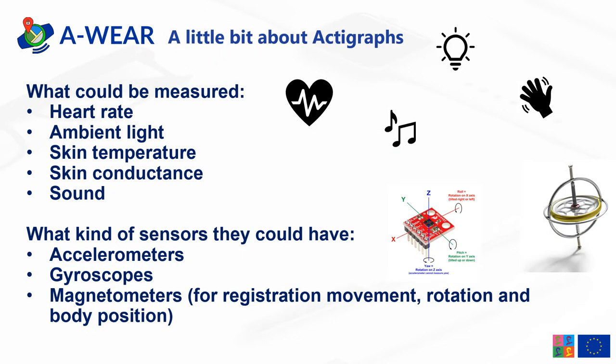Now I will be talking about the Actigraph. It is a kind of wearable device used for the detection, inter alia, of sleep disorders in PD patients. Actigraphy is a term for a non-invasive method for monitoring human rest-activity cycles and movements, and it is used for monitoring resting time, sleeping time, activity time, or progression of diseases. Wearable actigraphy devices are commonly equipped with sensors like accelerometers, gyroscopes, and magnetometers for the registration of movement, rotation, and body position. Additional functionality could be provided by surface measurements such as heart rate, skin temperature, skin conductance, and sound.